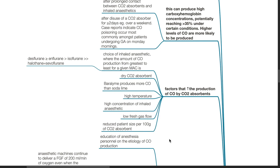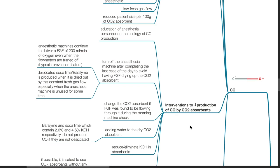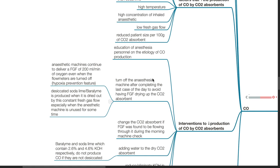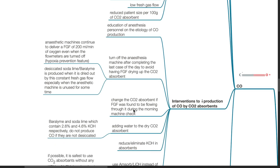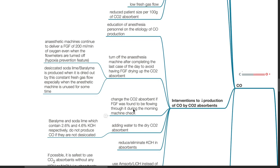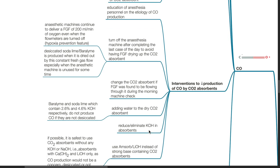Interventions to reduce the production of carbon monoxide by CO2 absorbents: educate anesthesia personnel on the etiology of CO production; turn off the anesthesia machine after completing the last case of the day to avoid having fresh gas flow drying up the CO2 absorbent. Note that anesthetic machines continue to deliver a fresh gas flow of 200 mL/min of oxygen even when the flow meters are turned off, as a hypoxia prevention feature — desiccated soda lime or baralime is produced when dried out by this constant fresh gas flow. Change the CO2 absorbent if FGF was found to be flowing through it during the morning machine check. Add water to dry CO2 absorbent. Baralime and soda lime which contain KOH do not produce CO if they are not desiccated.